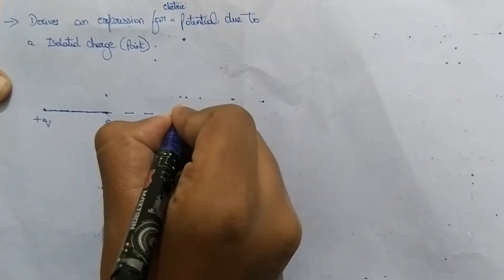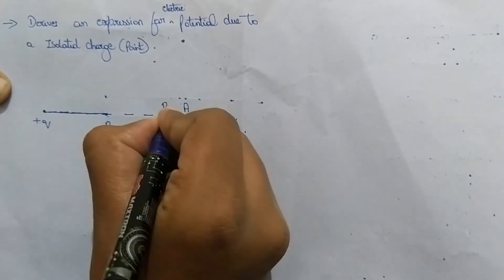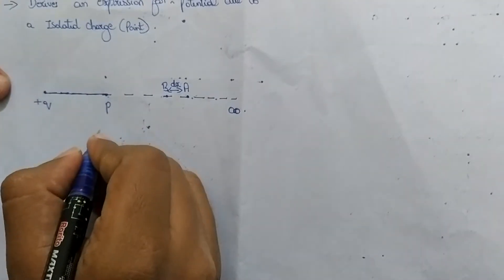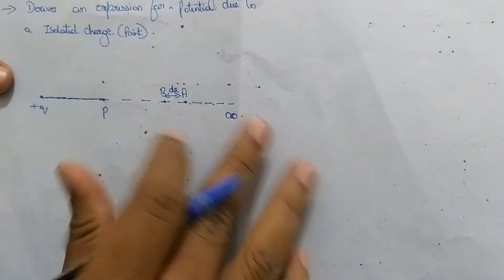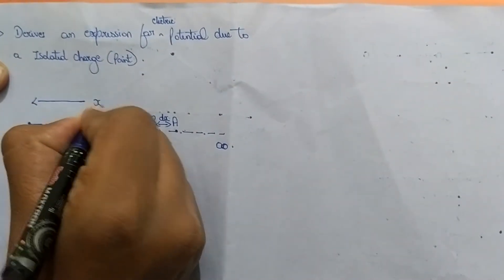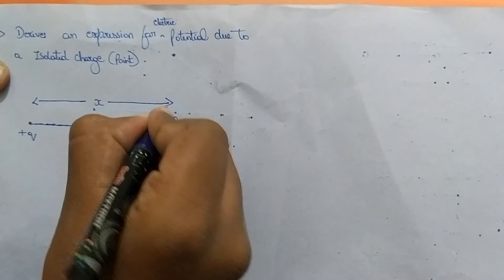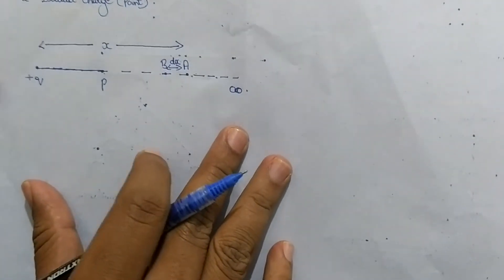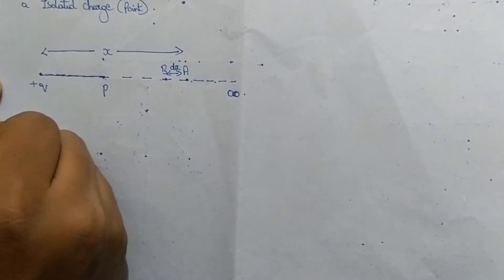Let us take a segment of the path and name it as AB of distance dx, and let us take distance x from Q to A. This is the diagram for the required derivation.